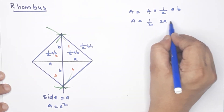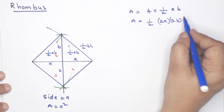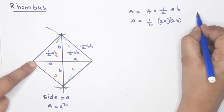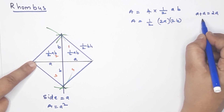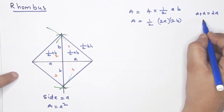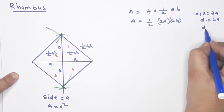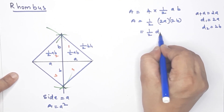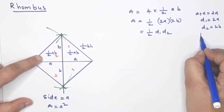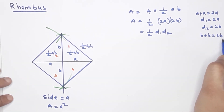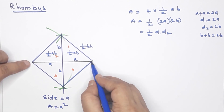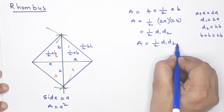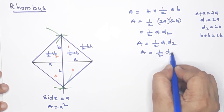The area is equal to 4 times half times A times B — base into height. Here we have 4 triangles. Each triangle has base half of 2A and height half of 2B, giving us 2A and 2B as the full diagonals. So D1 equals 2A and D2 equals 2B. Therefore the area equals half D1 times D2.